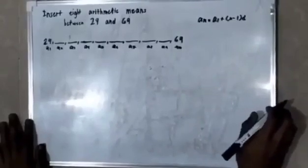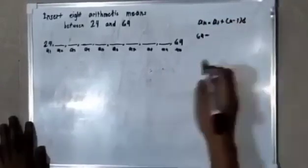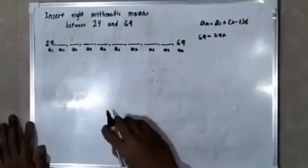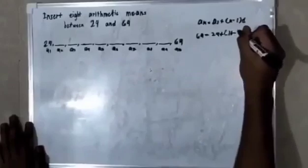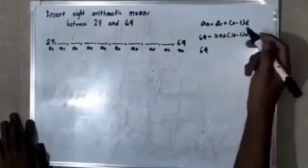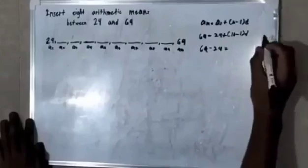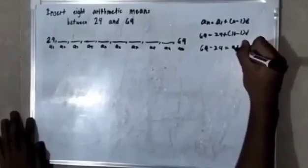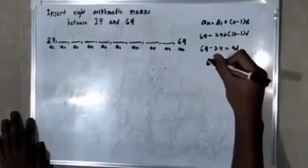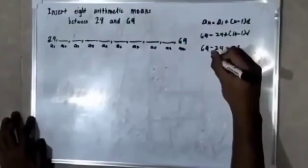The a sub n, which is the last term 69, is equal to a sub 1, the first term 24, plus n. How many terms we have? 10. 10 minus 1 times d. So 69, transpose 24 making it negative, is equal to 10 minus 1, 9 times d.